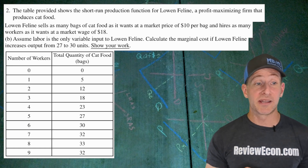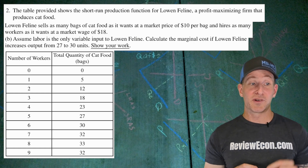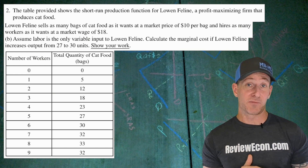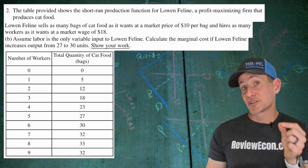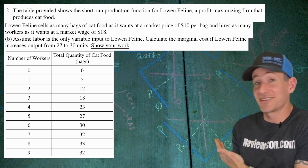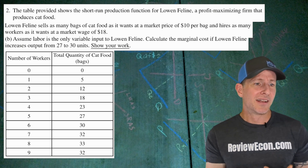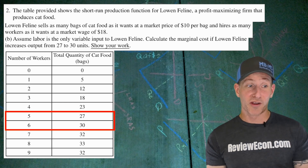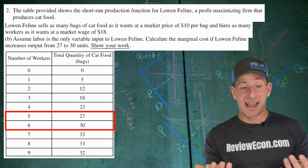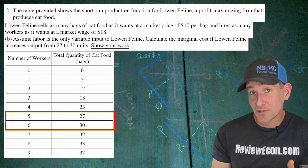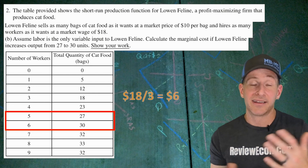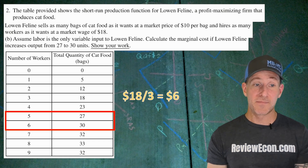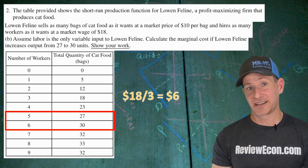Now assuming labor is the only variable input, we calculate the marginal cost if Lowen Feline increases output from 27 to 30 units. This is a tricky one — it's the first I can remember where we actually needed to divide by quantity to find marginal cost. Going from five workers to six workers moves output from 27 to 30. That worker costs $18 and we get three more units produced. So it's $18 divided by the change in quantity of three, giving a marginal cost of $6.